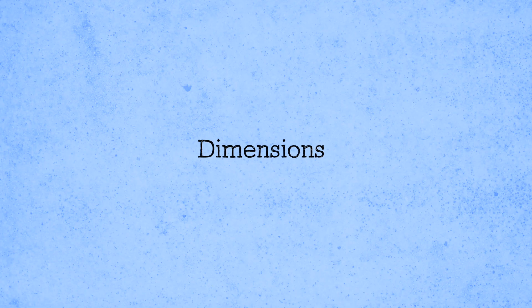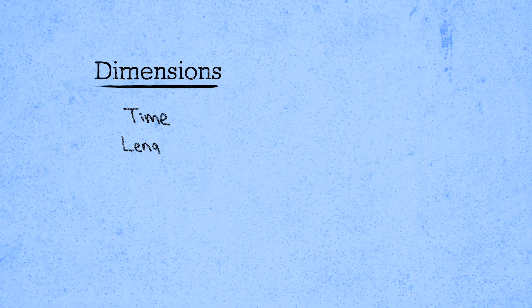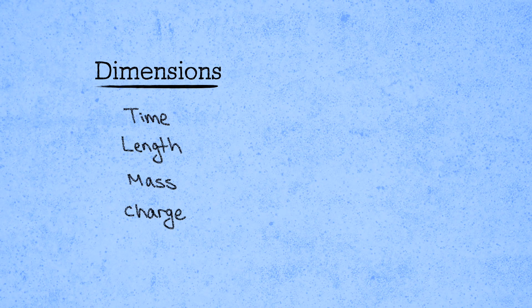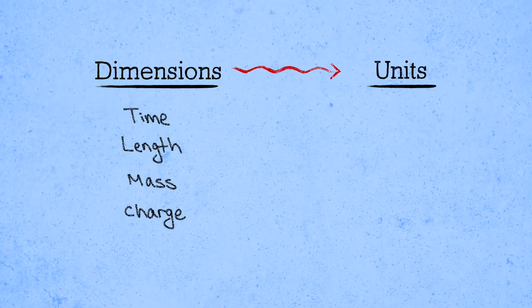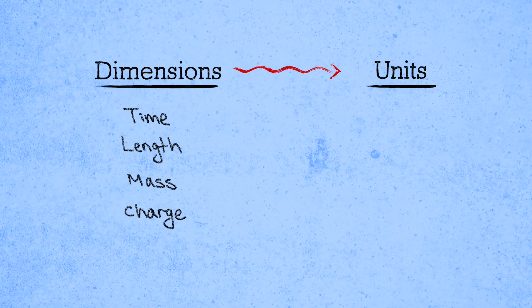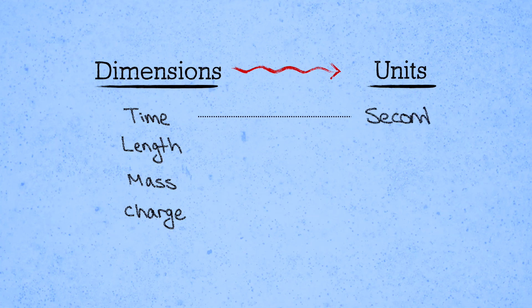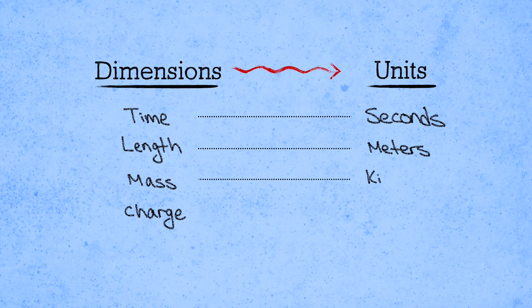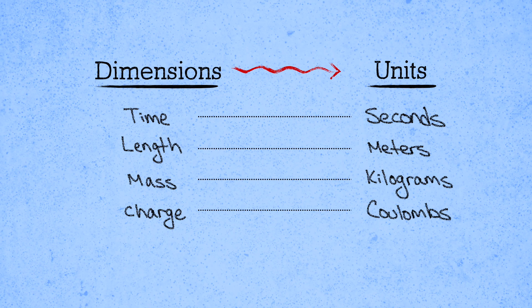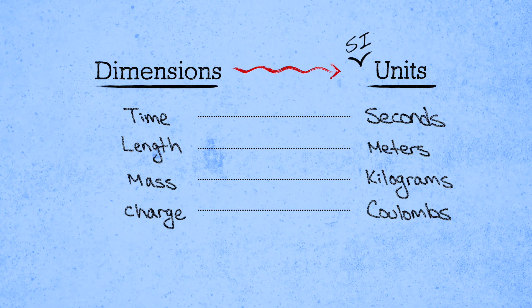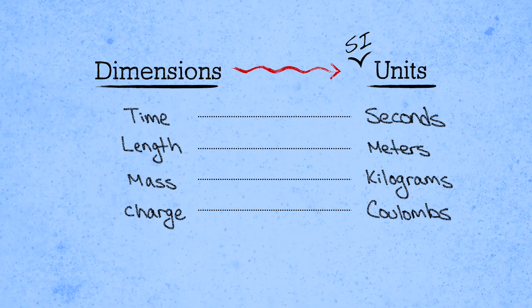The numbers that we measure in science typically have dimensions. For example, time, length, mass, charge, and so on. And we set up systems of units in order to establish standards for how to compare them. Seconds for time, meters for length, kilograms for mass, and coulombs for charge. These are the standard SI units that we use to measure these quantities.